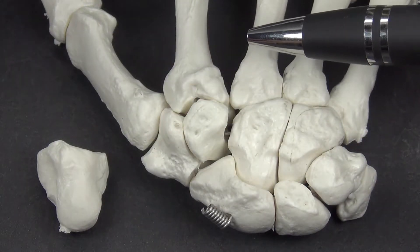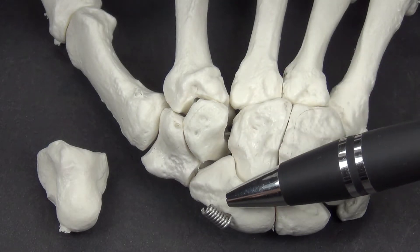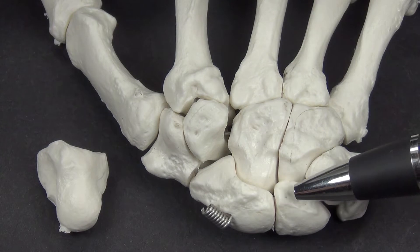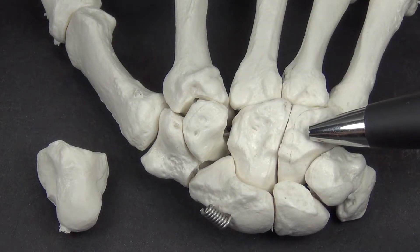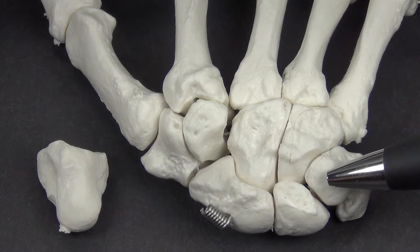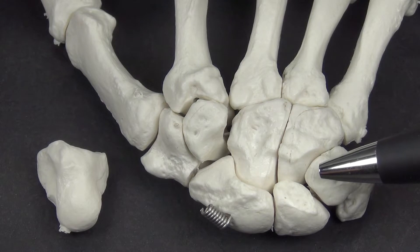It articulates with the second, third, and fourth metacarpals distally, the scaphoid and the lunate proximally, the trapezoid laterally, and the hamate medially. It can also articulate with the triquetrum when the wrist is in radial deviation. It has two non-articular surfaces, the dorsal and the palmar.